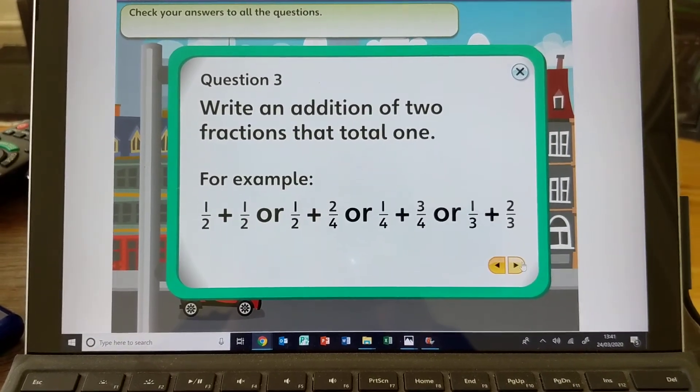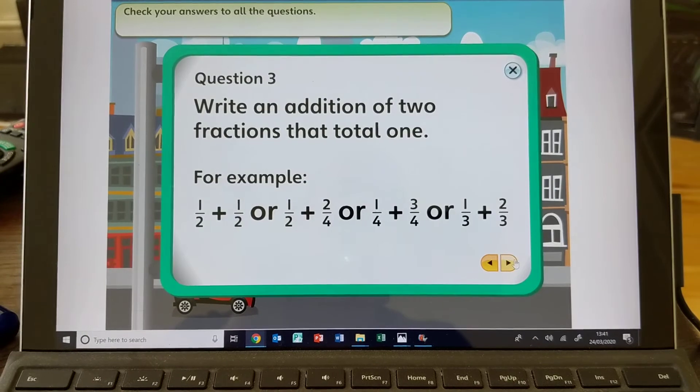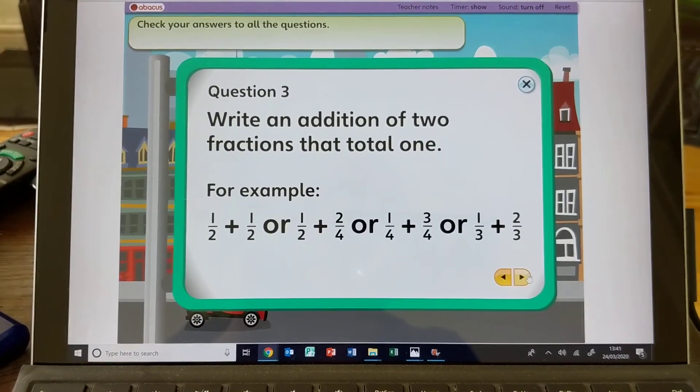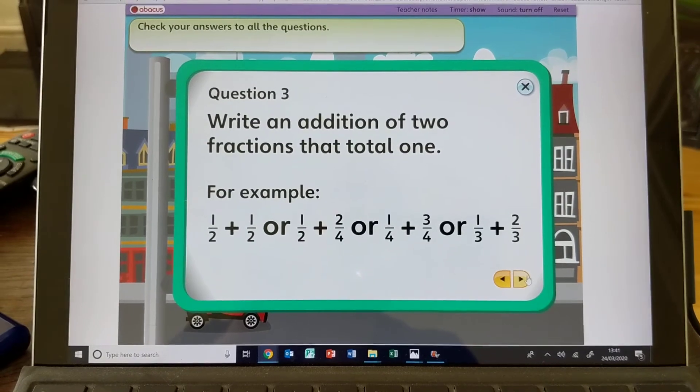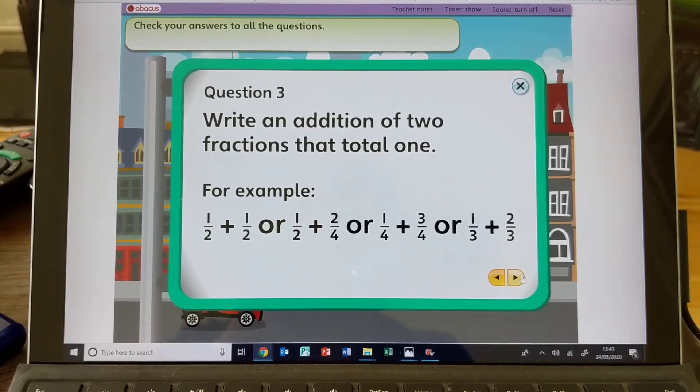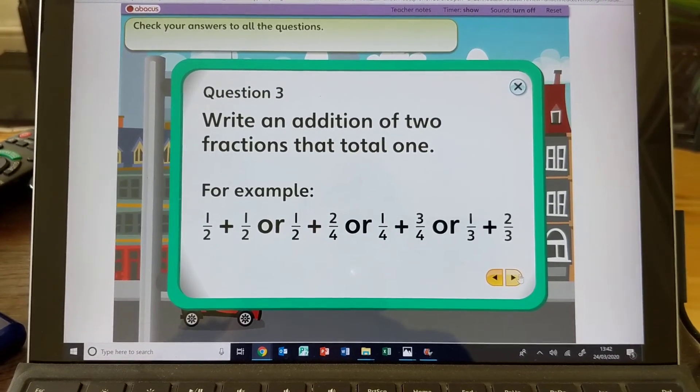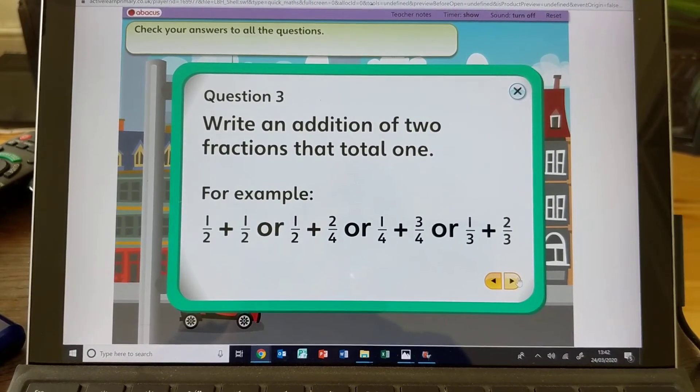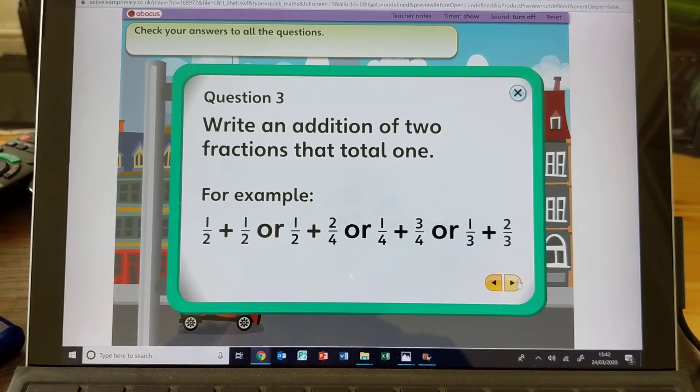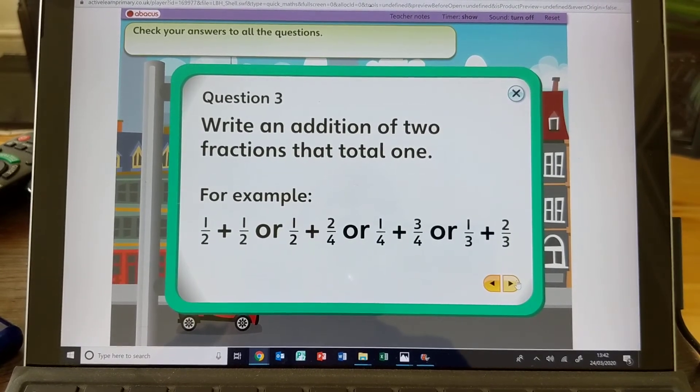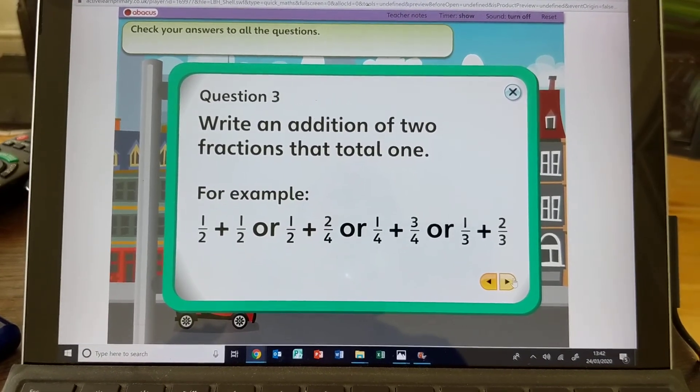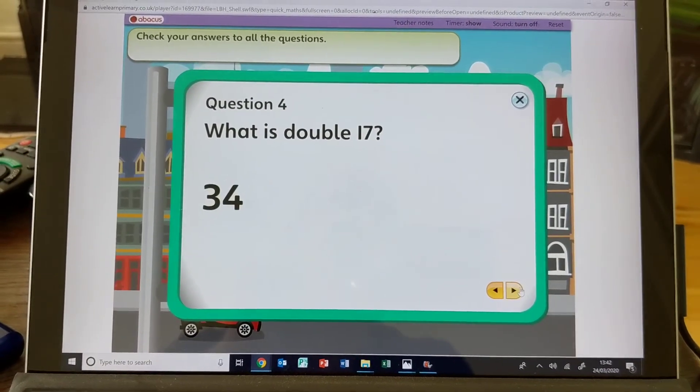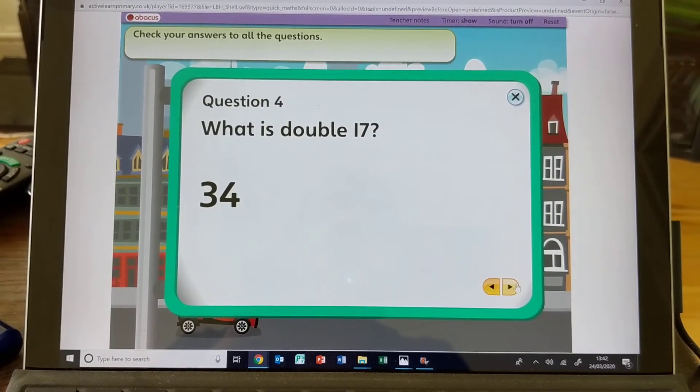Question 3: Any of those examples is fine, or similarly 2/5 plus 3/5, or 5/6 plus 1/6, anything like that. As long as the two top numbers, the numerators, add up to equal the same as the denominator. If both denominators are the same, which they do need to be. And double 17 is 34.